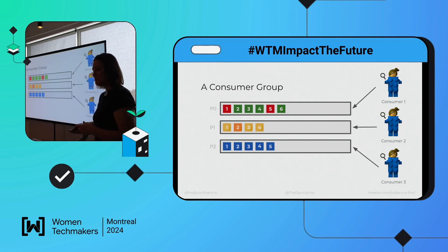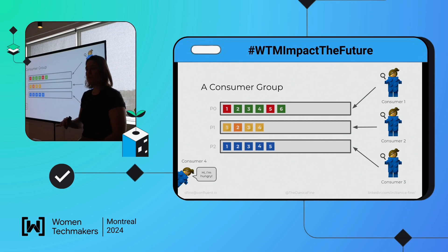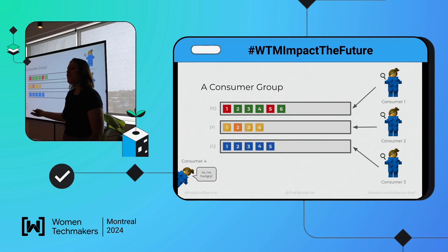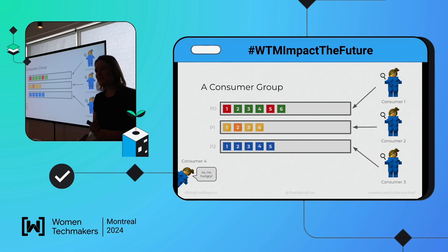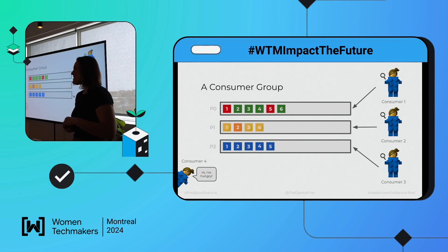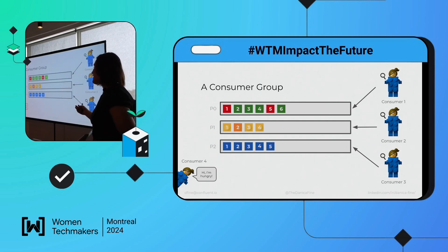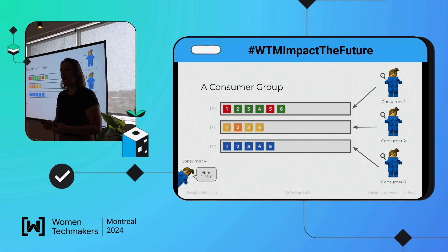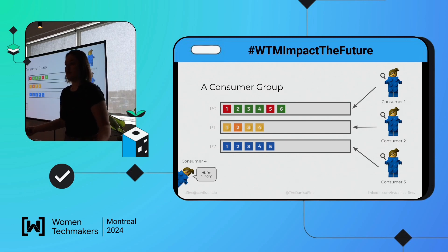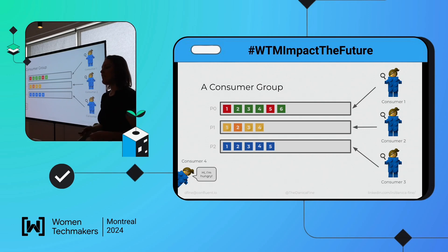Can we add another consumer? Absolutely — just because we're capped at the parallelism for this topic doesn't mean you can't spin up more consumers with the same consumer group ID, but they won't do anything. We call these starved consumers — they have no partition assignment and are simply waiting for one of the other consumers to die. In the event consumer three goes down, consumer four who is already running can have that partition assignment rebalanced to it by the consumer group coordinator.